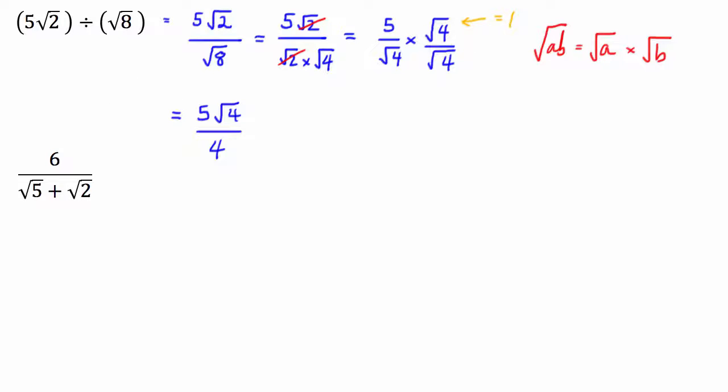So basically you can think of that last step that I took as being another surd law, where we have if we have the square root of a number times by the square root of the same number, it just equals that number. Alright, so on to the next question. For this one here, we're going to have to rationalize the denominator.